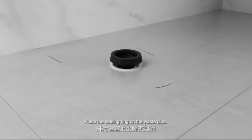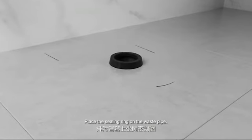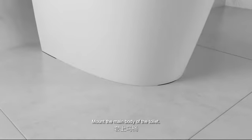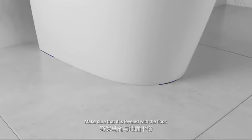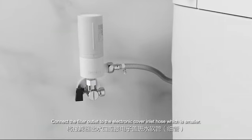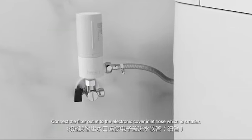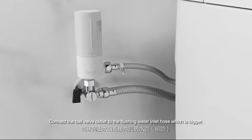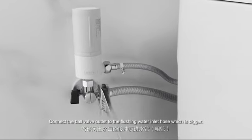Place the sealing ring on the waste pipe. Mount the main body of the toilet. Make sure that it is leveled with the floor. Connect the inlet hose: connect the filter outlet to the electronic cover inlet hose, which is smaller. Connect the ball valve outlet to the flushing water inlet hose, which is bigger.